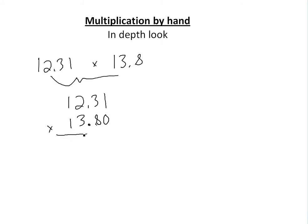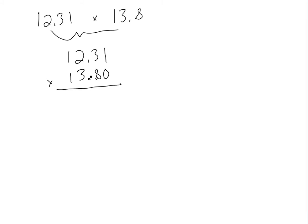When we multiply, we go from the rightmost digit and multiply by every single digit on top. If it's zero, everything is zero, so we just ignore it. So eight times one is eight. Eight times three is 24, so we put four and carry two. Eight times two is 16 plus two is 18, so we put eight and carry one. Eight times one is eight plus one is nine.